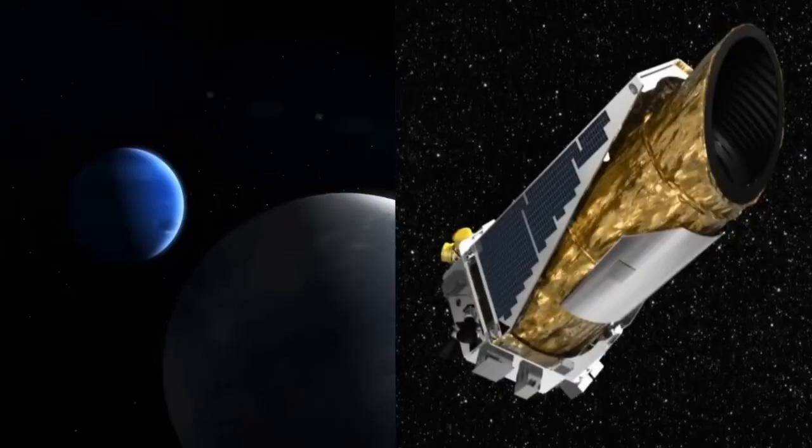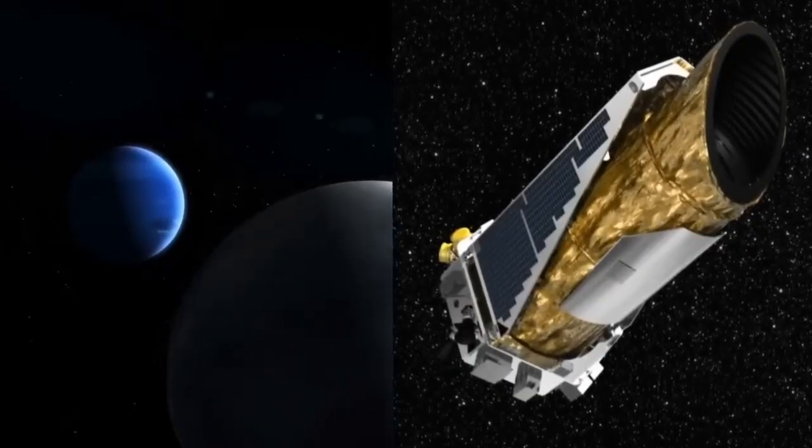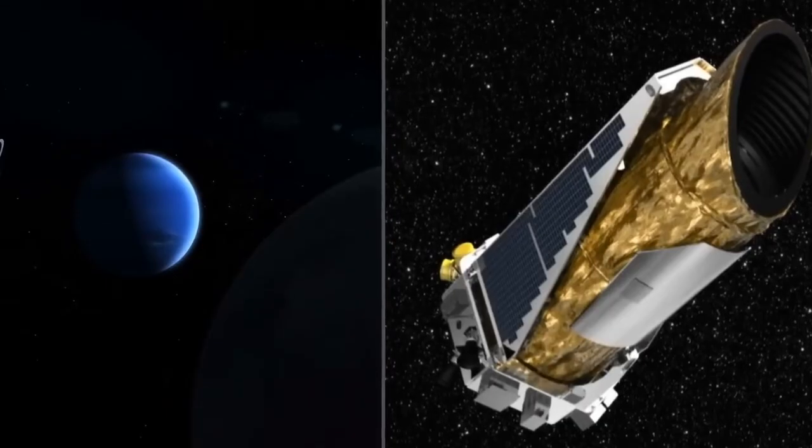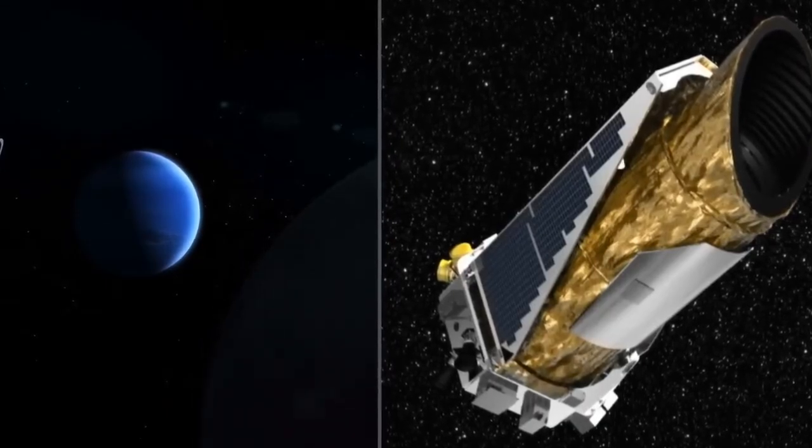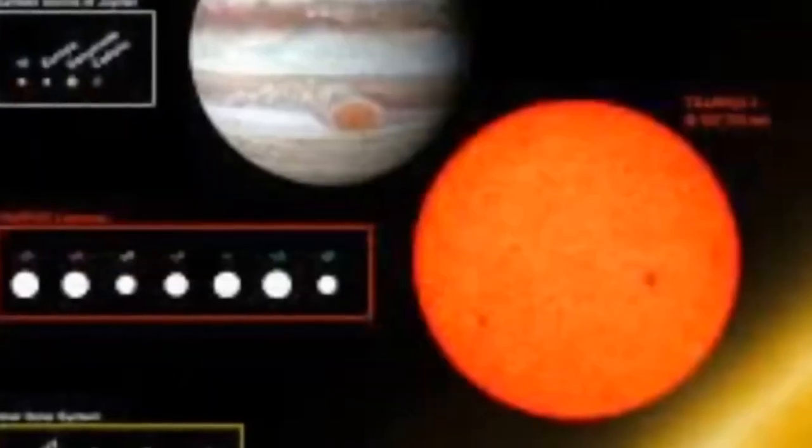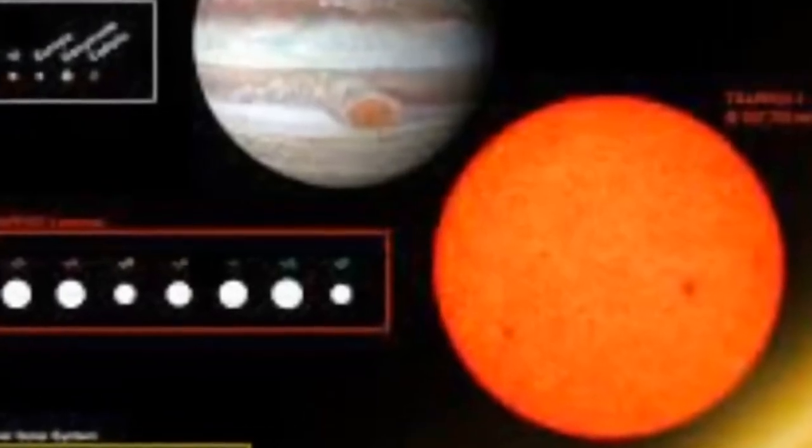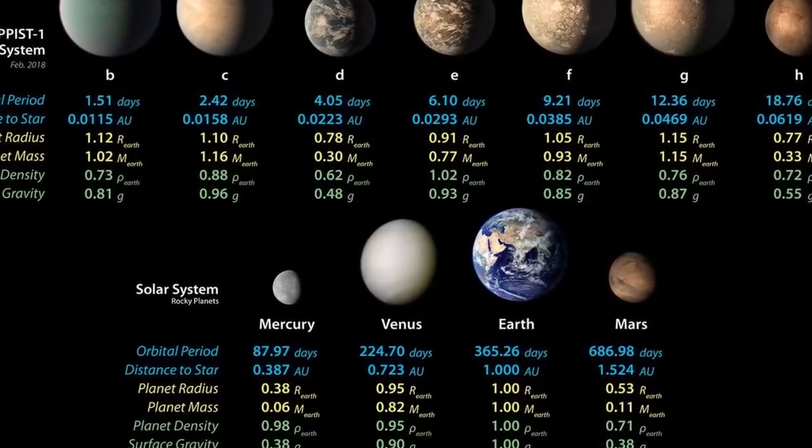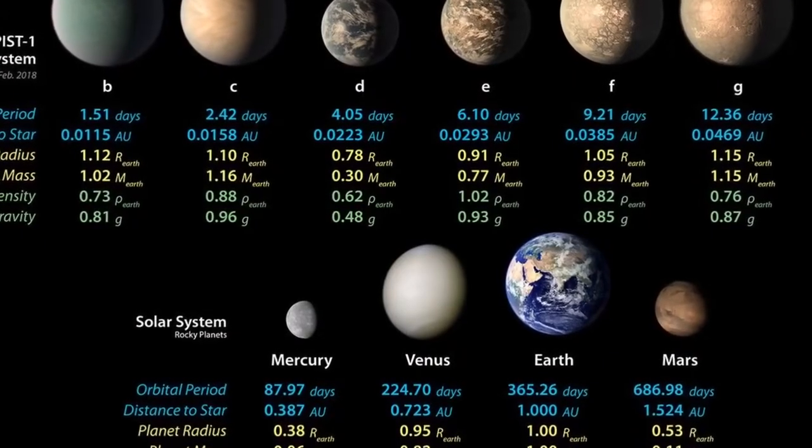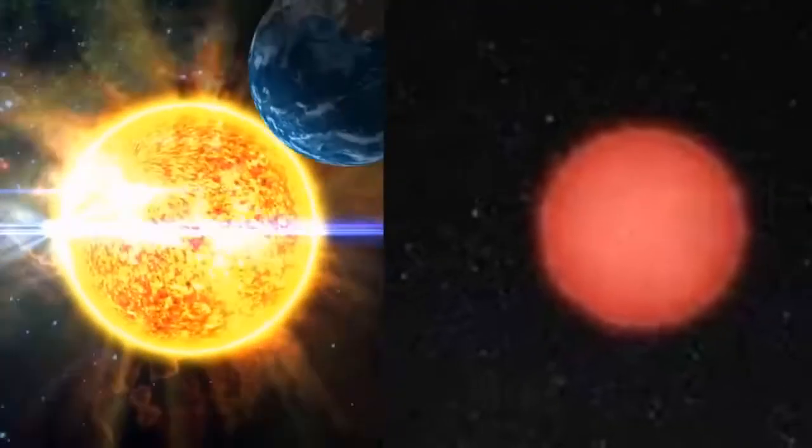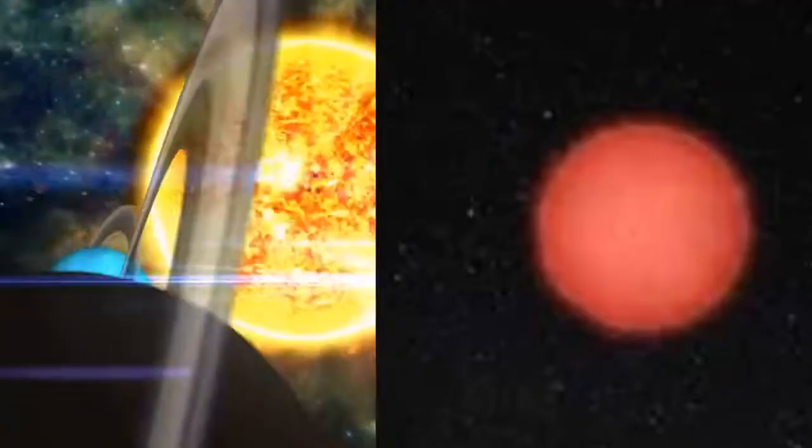Perhaps one of the most groundbreaking revelations stemming from the Kepler mission is the realization that over one-third of stars akin to our sun could potentially host Earth-sized planets within their habitable zones—regions where conditions may be conducive to liquid water and, by extension, life as we know it. Among the fascinating exoplanetary systems brought to light is TRAPPIST-1, a star renowned for its extraordinary planetary entourage. This stellar system boasts a remarkable count of seven rocky exoplanets, each with its own distinct characteristics. The diversity within the TRAPPIST-1 system serves as a testament to the myriad possibilities inherent in planetary formation, challenging our preconceptions and expanding our understanding of the cosmic tapestry.